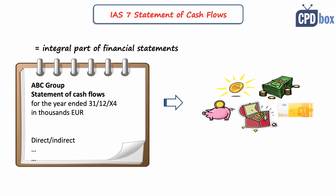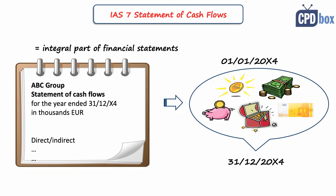The statement of cash flows is prepared for a certain period — for example, from 1 January to 31 December. It shows how the company generated cash and where it was spent over that period, showing the movement of cash and cash equivalents. Like every other component of financial statements, it must contain: the name of the reporting entity, whether it is a group or individual statement, the title, the period covered, the reporting currency, and the rounding used.